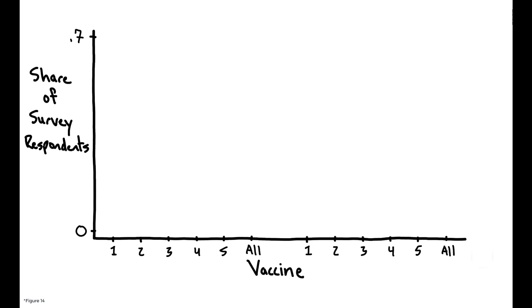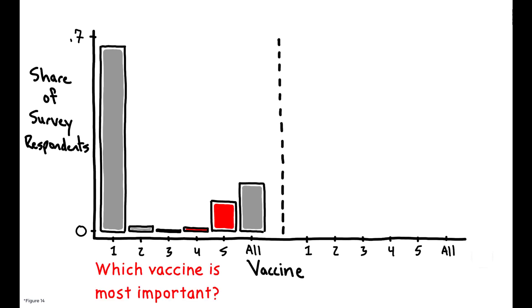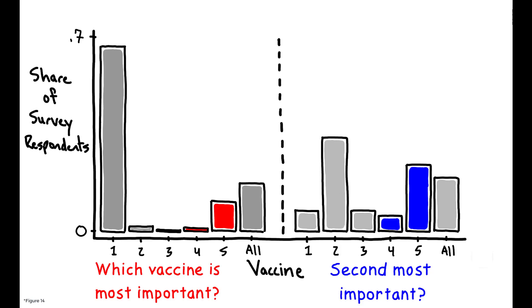To explain the starkly different effects of the signal at four and the signal at five treatments, the author provides survey evidence that the fifth vaccine is widely believed to be much more important than the fourth. Thus, it appears to be important that signals are not only informative of an individual's actions, but also that they are linked to actions that are commonly perceived as valuable.